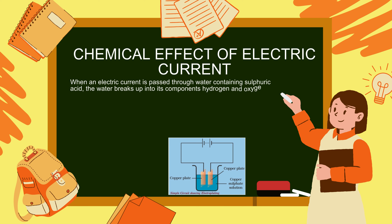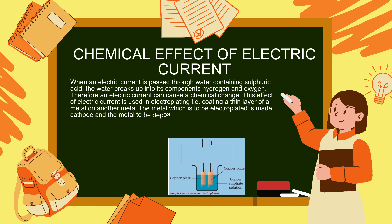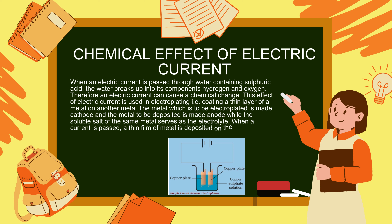Chemical effect of electric current: when an electric current is passed through water containing sulfuric acid, the water breaks up into its components — hydrogen and oxygen. Therefore, an electric current can cause a chemical change. This effect is used in electroplating — coating a thin layer of one metal on another. The metal to be electroplated is made the cathode, the metal to be deposited is made the anode, and the soluble salt of the same metal serves as the electrolyte. When current is passed, a thin film of metal is deposited on the cathode.